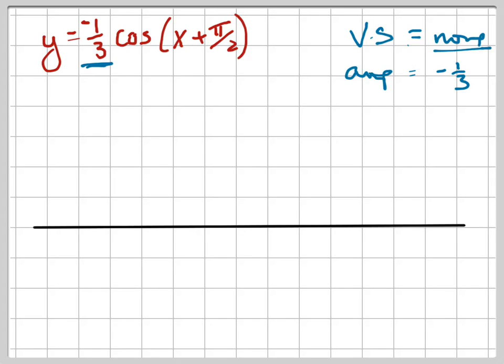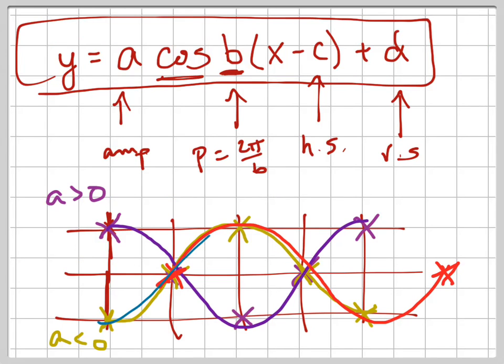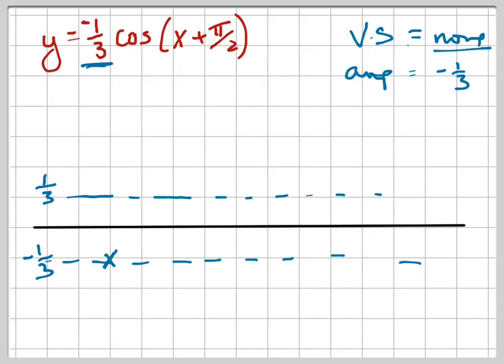And the amplitude is negative one-third, which means I'm going to go up. Let's call this line one-third, positive one-third, and let's call this line negative one-third. It's going to go, that's the positive and negative, but it's going to start on the bottom here, right? Because it was a negative amplitude, it starts on the bottom and goes up like that.